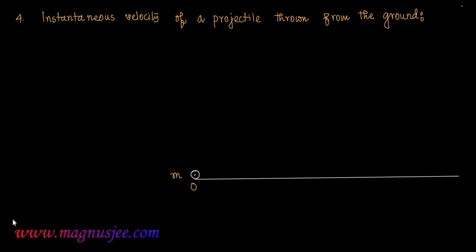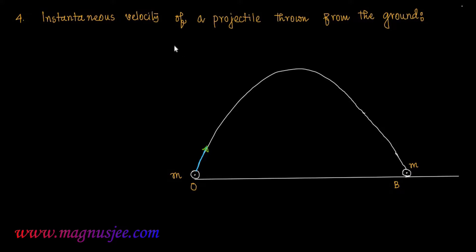A projectile of mass M is projected from the point O on the ground and describes a parabolic path, striking the ground at point B. The projectile is thrown with initial velocity u and strikes the ground at point B with velocity v double prime, such that v double prime equals u. V double prime makes an angle phi with the horizontal, and u is at an angle theta with the horizontal. Now phi equals theta and v double prime equals u.